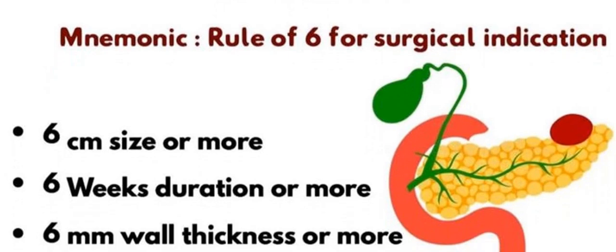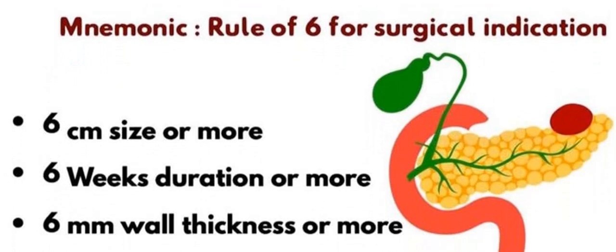The third indication is wall thickness — six millimeters or greater than six millimeters wall thickness is the third surgical indication for pseudocyst of the pancreas. These are the Rule of Six mnemonics for surgical indication, which are very easy to remember.